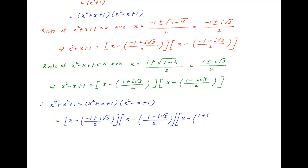This expands to the product of all four linear factors: (x minus (1 plus i root 3 upon 2)) multiplied by (x minus (1 minus i times root 3 upon 2)).